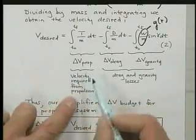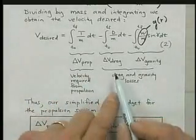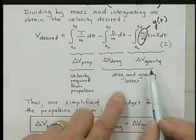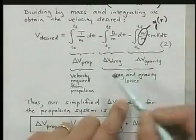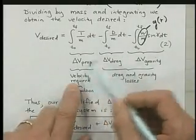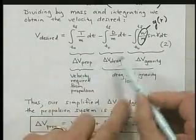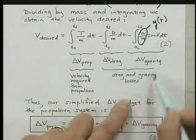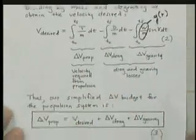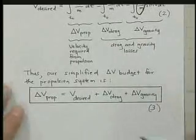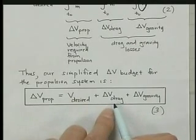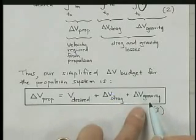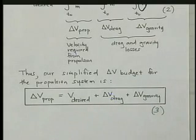We have the velocity here on the left that the propulsion system has to deliver, and we have the drag and the gravity losses that we have to overcome. These are losses that we have to beef up the propulsion system in order to make up for what we lose from these terms. If we rearrange our equation, we get the propulsion delta V in terms of what we desire, that is to get the orbit we want, and then the fact that we have to make up for drag and for gravity losses.